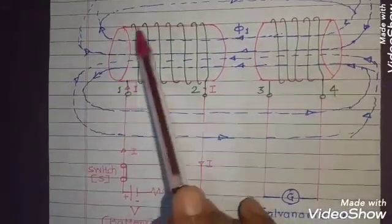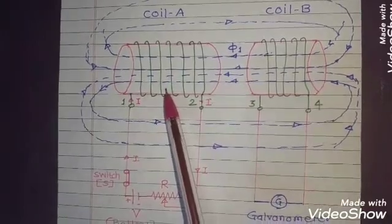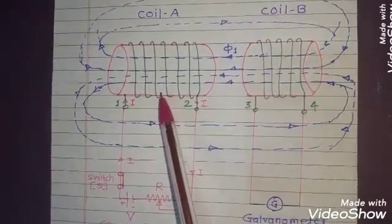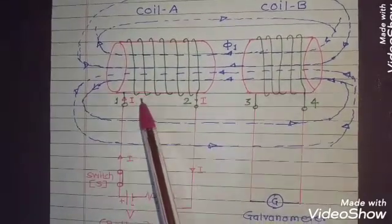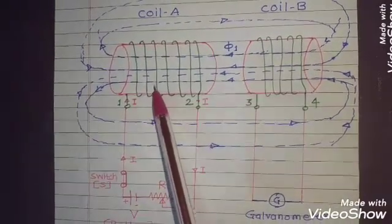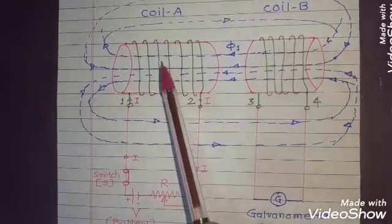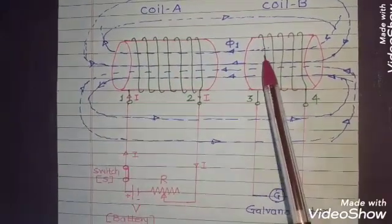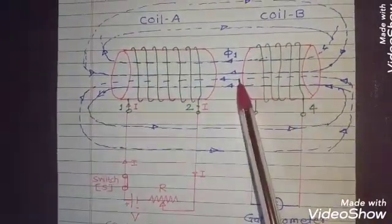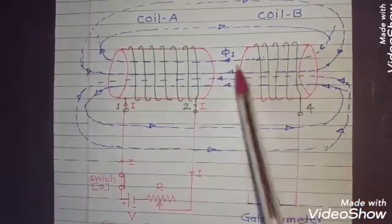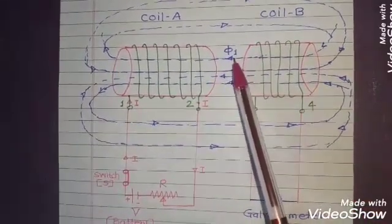Now, during this process, the coil A will produce an MMF that is magnetomotive force that will be equal to N1 into I. Now, corresponding to this MMF, this coil A will produce a flux. Some of that flux will link with the coil B, as shown here by the dotted lines. This flux linking with the coil B, we can temporarily call this as the phi1 flux.